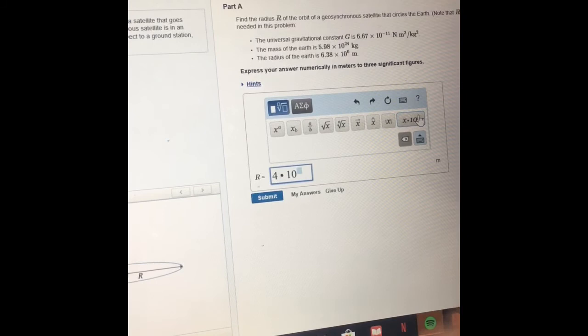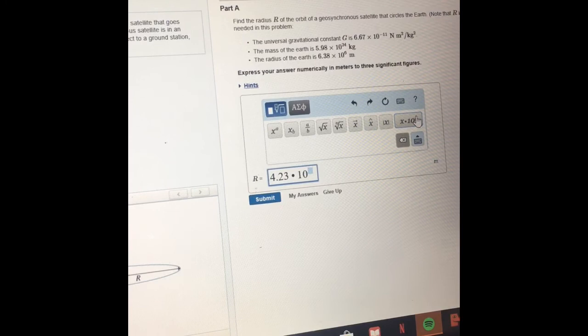So we're going to plug in our numbers to see if we're correct. 4.23 times 10 to the 7th. Cheers!